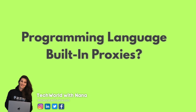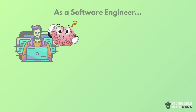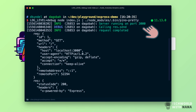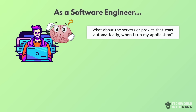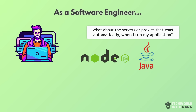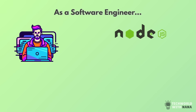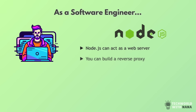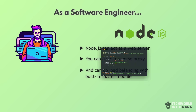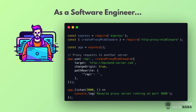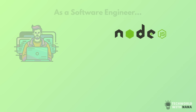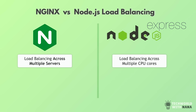Another question you may be asking, especially if you are a software engineer: what about the servers or proxies that start automatically when I run my Node.js or Java application? Are those reverse proxies as well? How do they run or start in the background? Well, these are lightweight proxies. For example, Node.js doesn't have a built-in reverse proxy, but you can easily create one using its HTTP module or a framework like ExpressJS, which is the framework most people use with Node.js. Compared to NGINX, which is used in production, ExpressJS serves a different purpose.